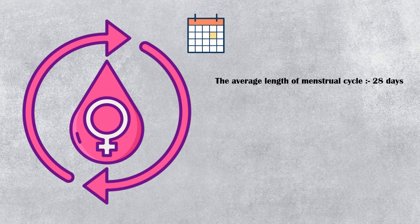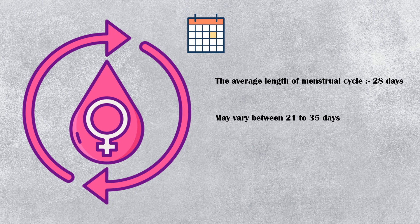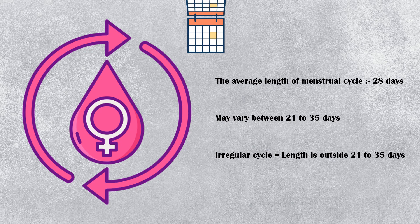The average length of a woman's menstrual cycle is 28 days. However, this period may vary between 21 to 35 days. An irregular menstrual cycle is where the length of the cycle is outside the range of 21 to 35 days. Most common causes for irregular periods include the following.